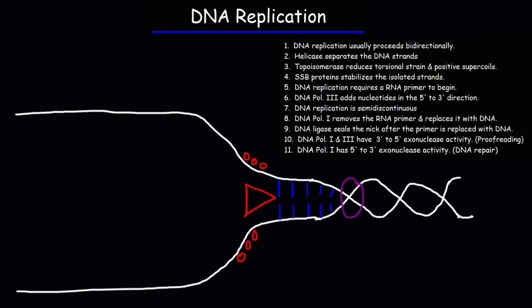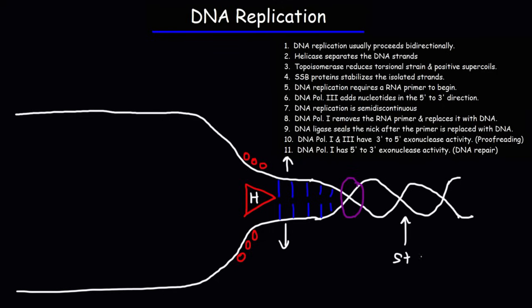Here is a picture of the replication fork. The first enzyme we'll discuss is helicase, which separates the two strands by breaking the hydrogen bonds that hold the nucleotides together. As helicase separates the two strands, torsional strain is created ahead of the replication fork. As a result, an enzyme is needed — DNA gyrase, which is a type of topoisomerase. These enzymes reduce the torsional strain and relieve positive supercoiling that could form in the DNA strand ahead of the replication fork. Keep in mind that DNA gyrase is a type of topoisomerase enzyme.